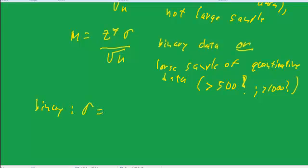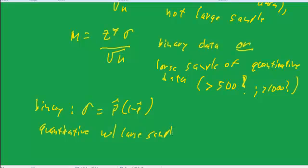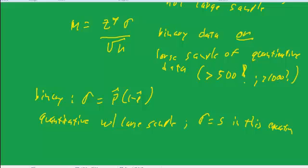With binary data, our estimate of sigma is the square root of p-hat times one minus p-hat. For quantitative data with a large sample, sigma is equal to s, the sample standard deviation — we substitute s for sigma in that equation.